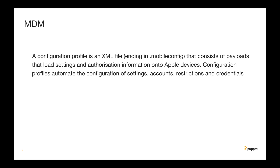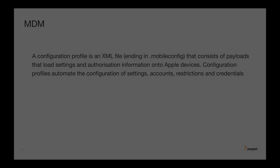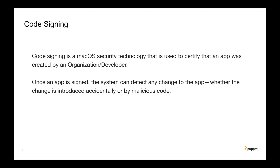Configuration through MDM is done using profiles. Profiles are XML files that load settings and authorization information onto Apple devices. Code signing is a macOS security technology used to certify that an app was created by an organization or a developer. Once an app is signed, the system can detect any change on the app, whether the change was introduced accidentally or by malicious code.